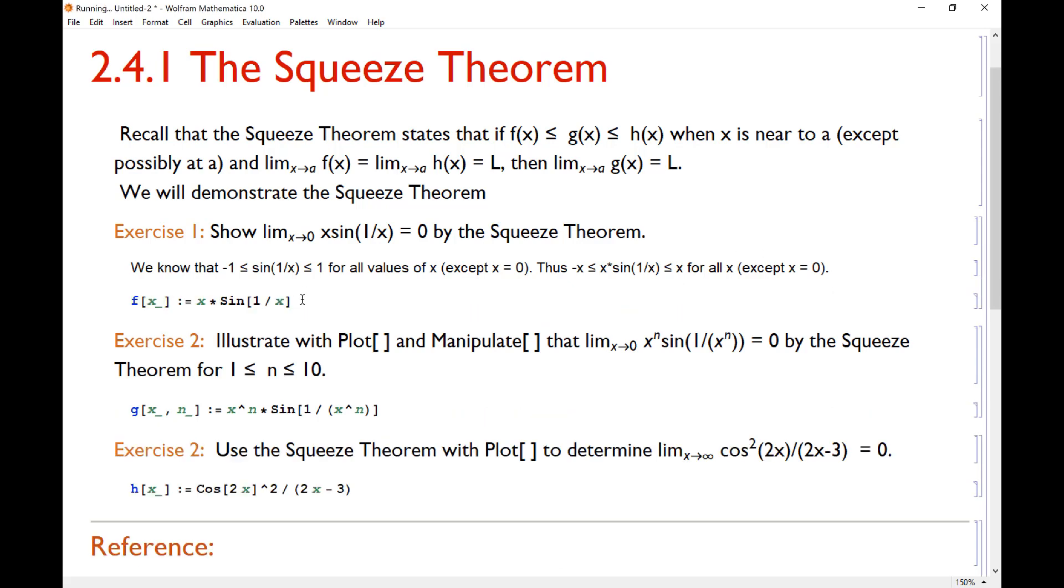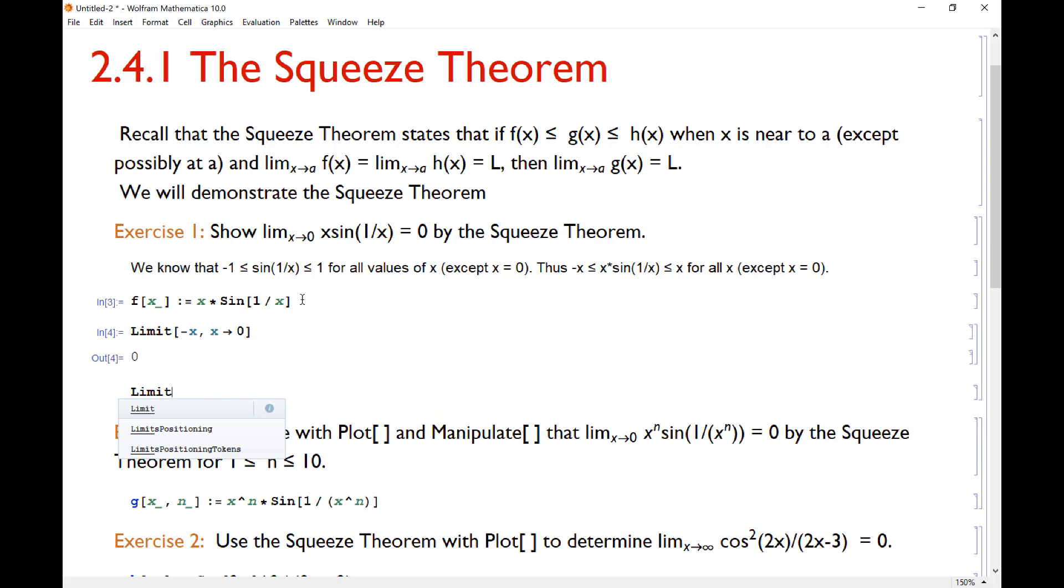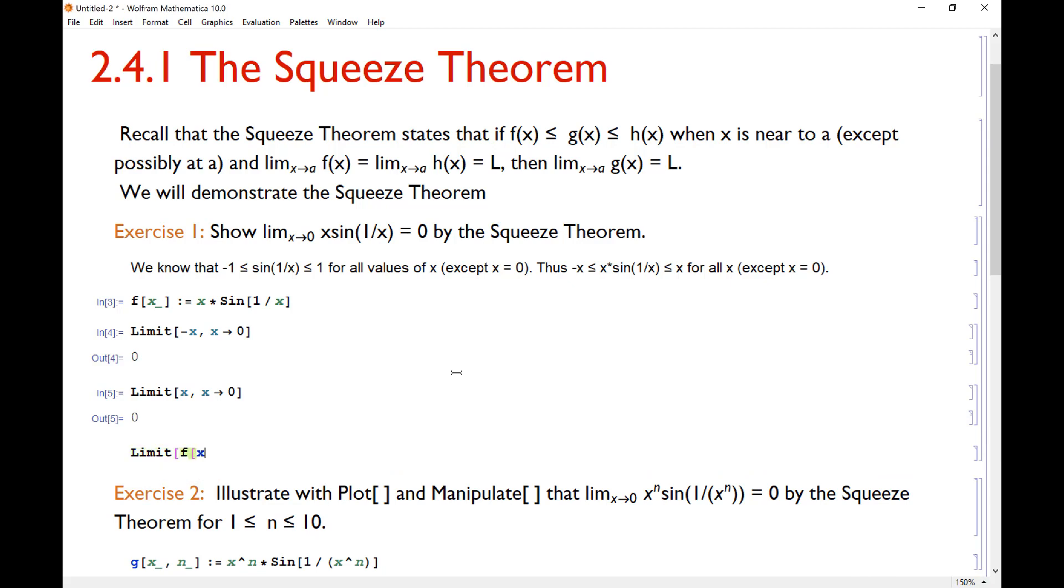So I'm going to define that function x*sin(1/x). And since I know that the limit of -x as x approaches 0 is going to be 0, and also the limit as x approaches 0 of x will go to 0, since I know those two things, and f(x) is trapped between those two values always, then I know by the squeeze theorem that the limit of my function as x goes to 0 has to be 0.